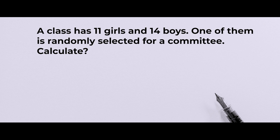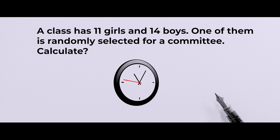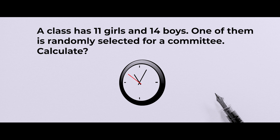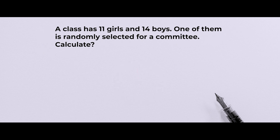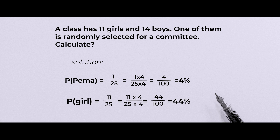Children, you have an activity to do. Here is the question — can you try it yourself? A class has 11 girls and 14 boys. One of them is randomly selected for a committee. Calculate. Were you able to solve the questions? Hope you have done it.